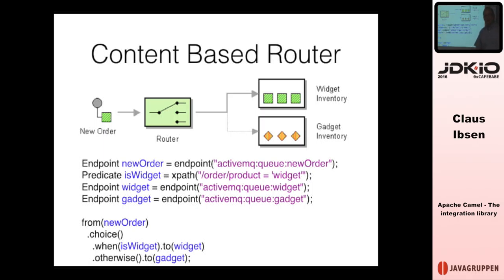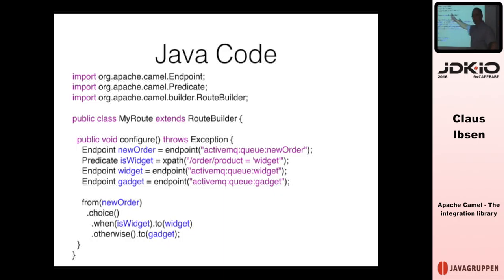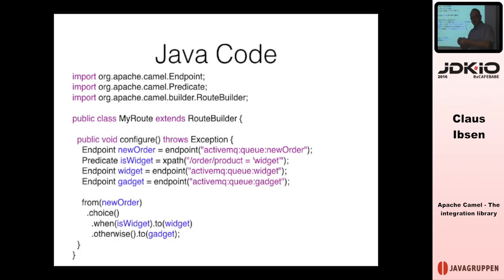As a Java developer, this looks familiar — it is Java code, and Java code should be in a method. We can call this method 'configure', put it inside a class called 'MyRoute', and that route extends RouteBuilder. RouteBuilder is our first clue about Camel — it's a class from Camel that allows you to define Camel routes in the configure method. All this code here you can compile and run with Camel. You just need to configure the ActiveMQ component with the URL for the message broker.